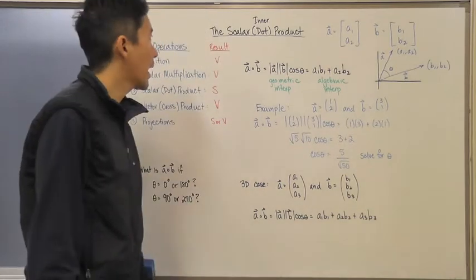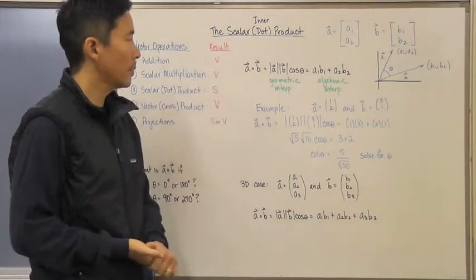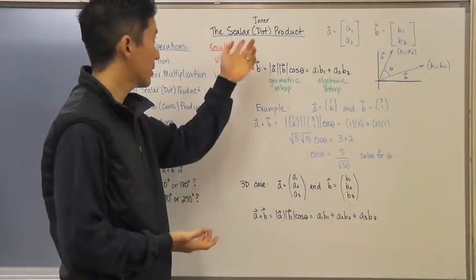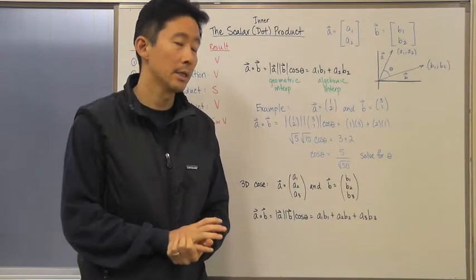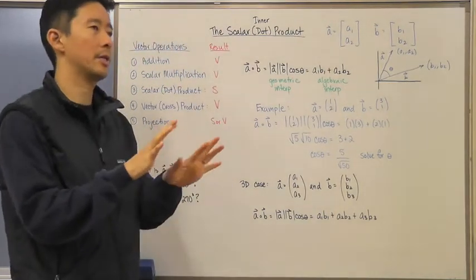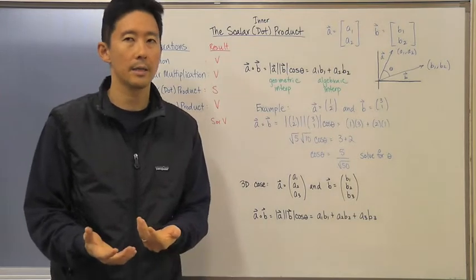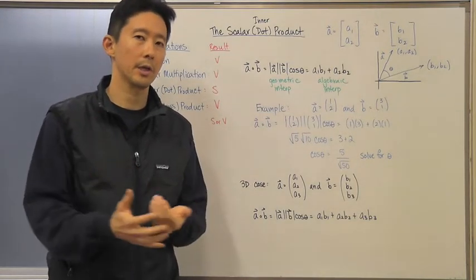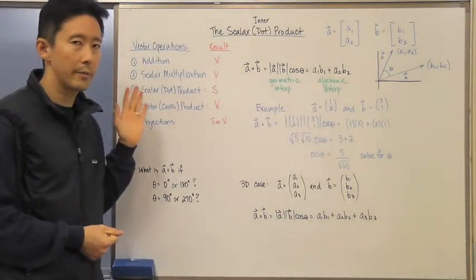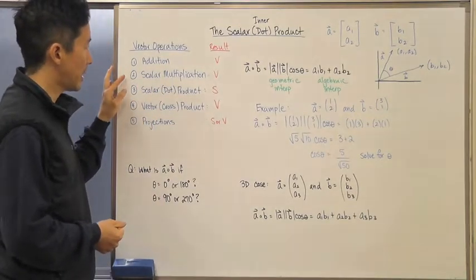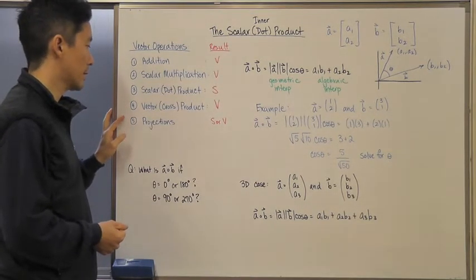Hello everyone. Let's take a look at what we're going to call the scalar product. There are a couple of ways to talk about this — it is either called the scalar or dot product, or more infrequently, the inner product. Let's go back and think about all the operations we applied to vectors, because this is really going to be the last operation we look at for this unit. We had addition, scalar multiplication, and now this last one: the scalar or dot product, the vector cross product, and projections.